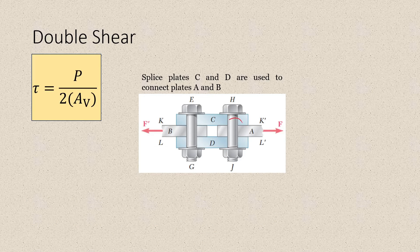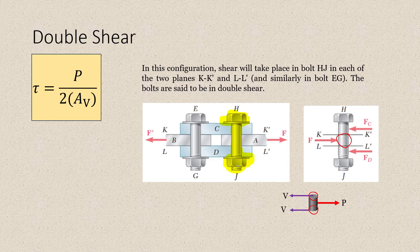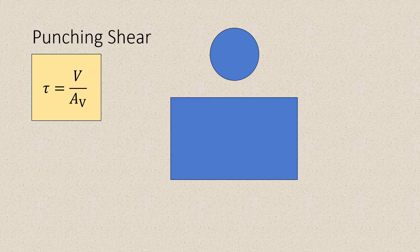If you want to make sense of this, we can consider bolt HJ. We have force F transmitted from this one, and if you consider the middle part of the bolt, we have two resisting areas — this one and this one. Next, we have our punching shear.